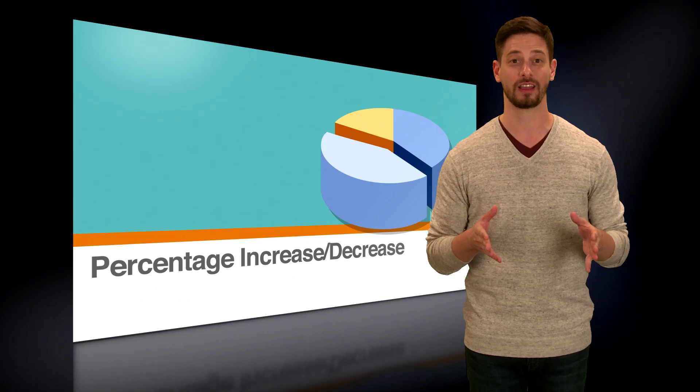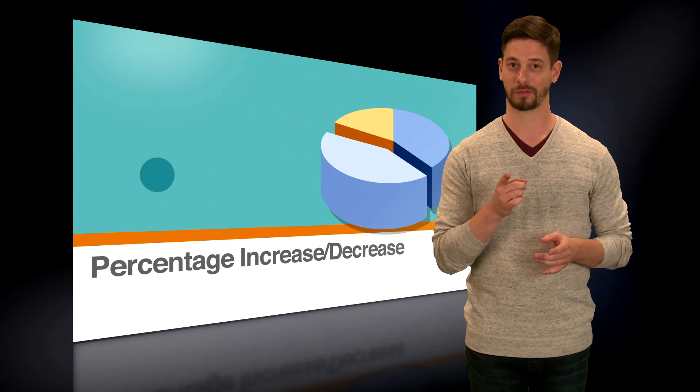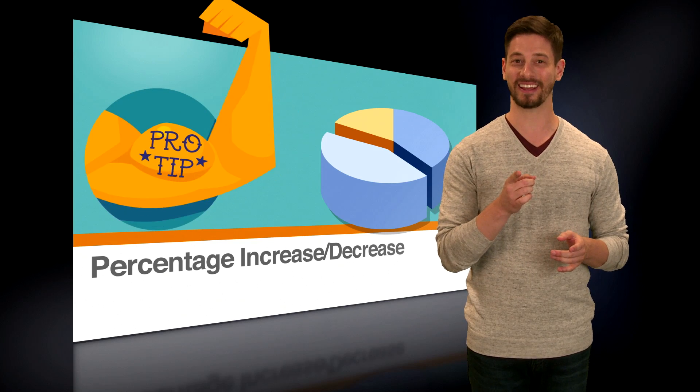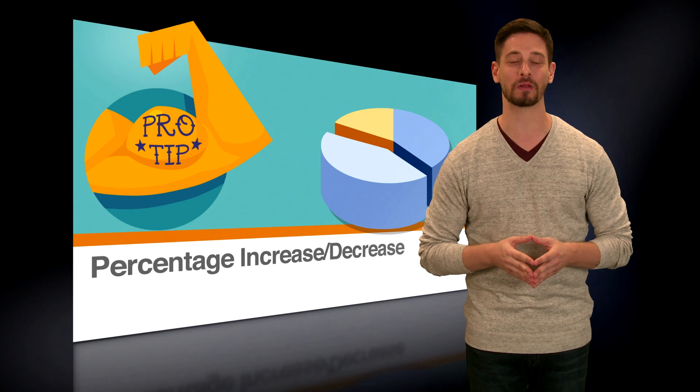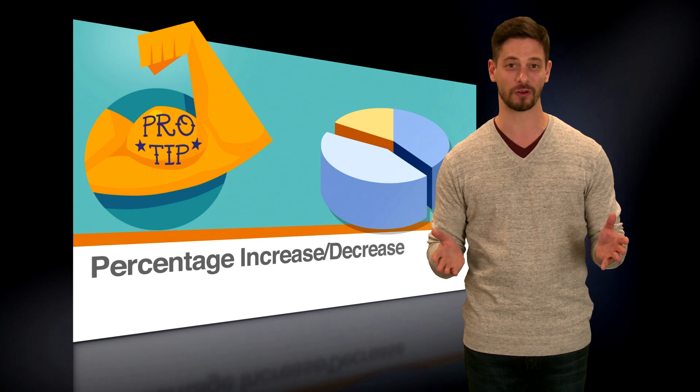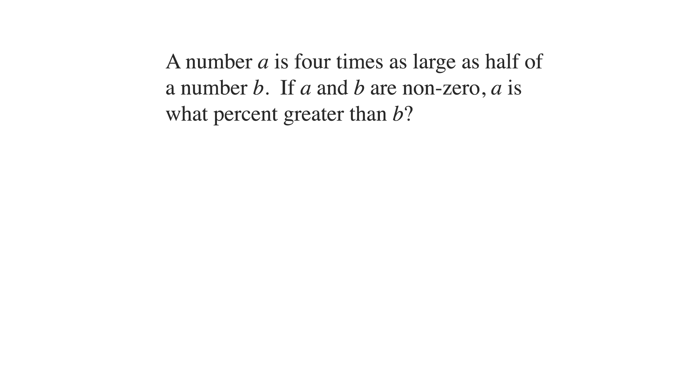Knowing these percentage equations will help you solve both percentage increase and decrease problems. But picking numbers when possible can get you to an answer faster. Pro tip: generally the best number to pick for percentage problems is 100. Let's try this strategy on an ACT problem.